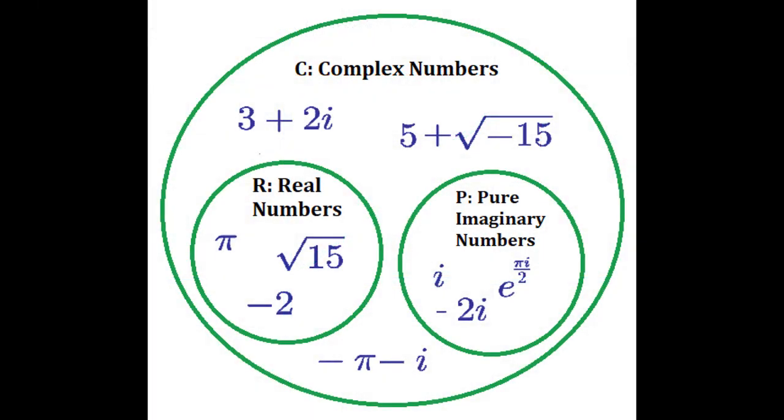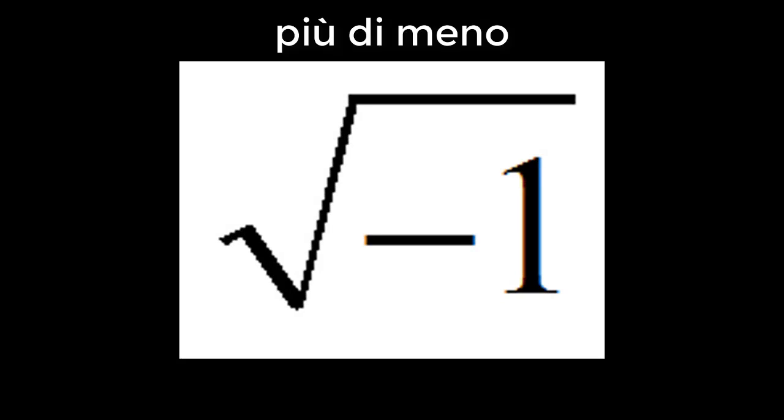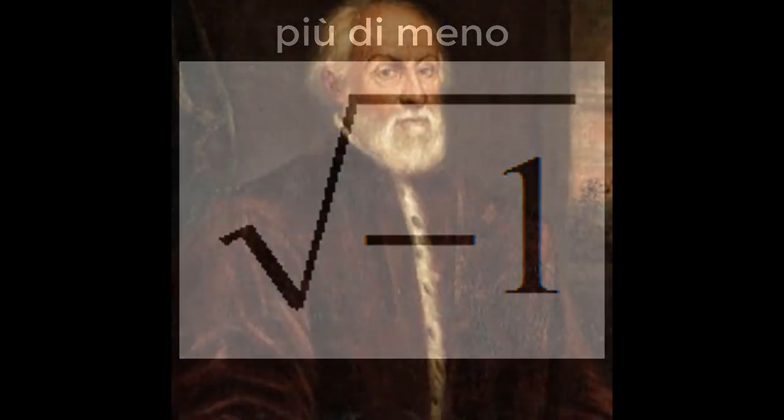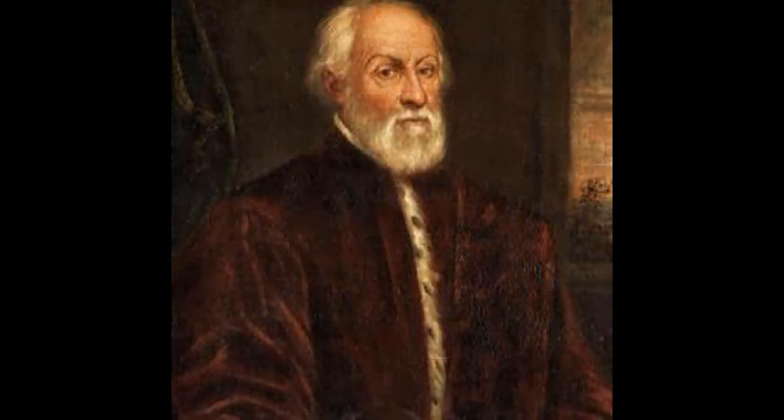The prospect of a negative within a square root was baffling to mathematicians for many years. They considered it to be an impossibility. It wasn't until the 16th century that any term was given to the square root of negative one: piu di meno, which literally translates to more less. It was coined by Raphael Bombelli, an Italian mathematician who was the first person to really write anything remotely formal on the square root of negative one.